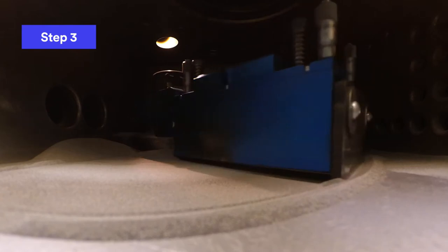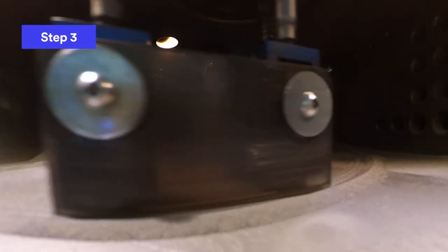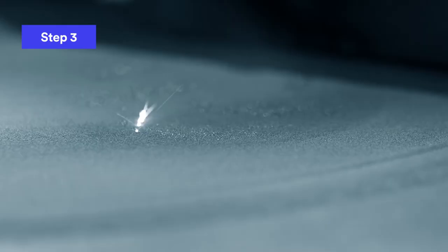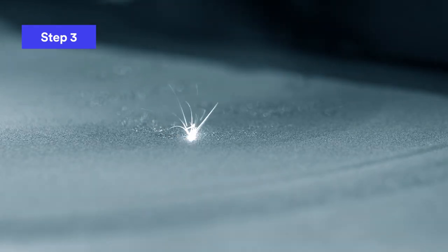A thin layer of metal powder is then spread over the build platform, and a high-power laser scans the cross-section of the component, melting or fusing the metal particles together and creating the first layer of the 3D printed part.